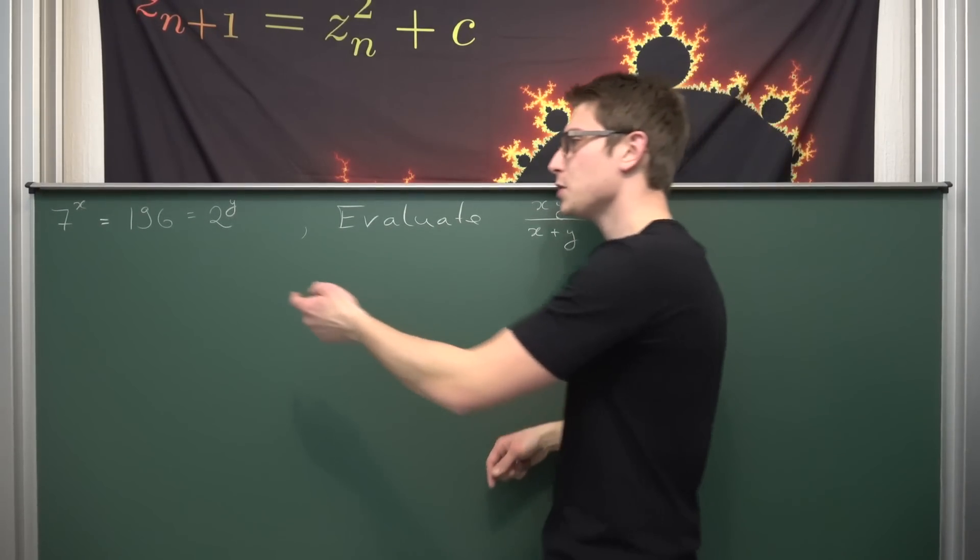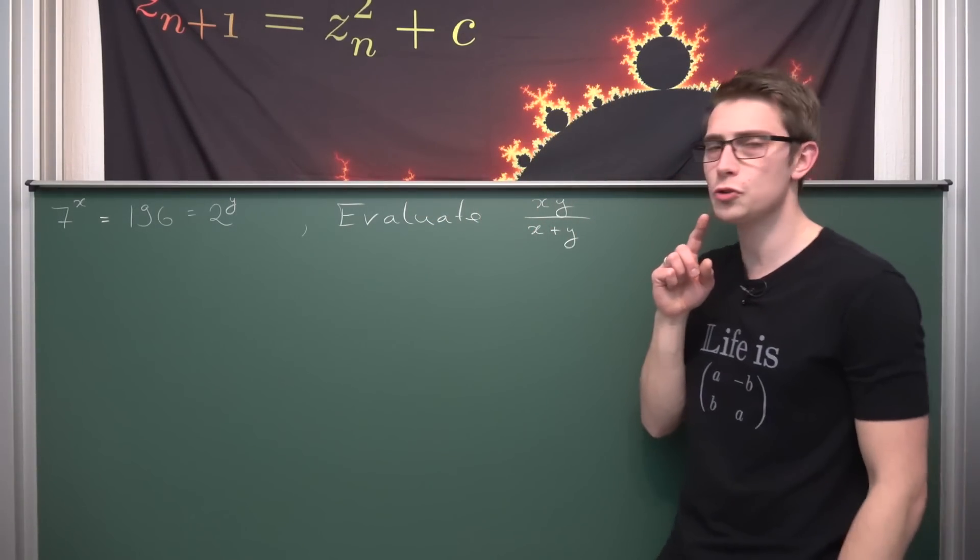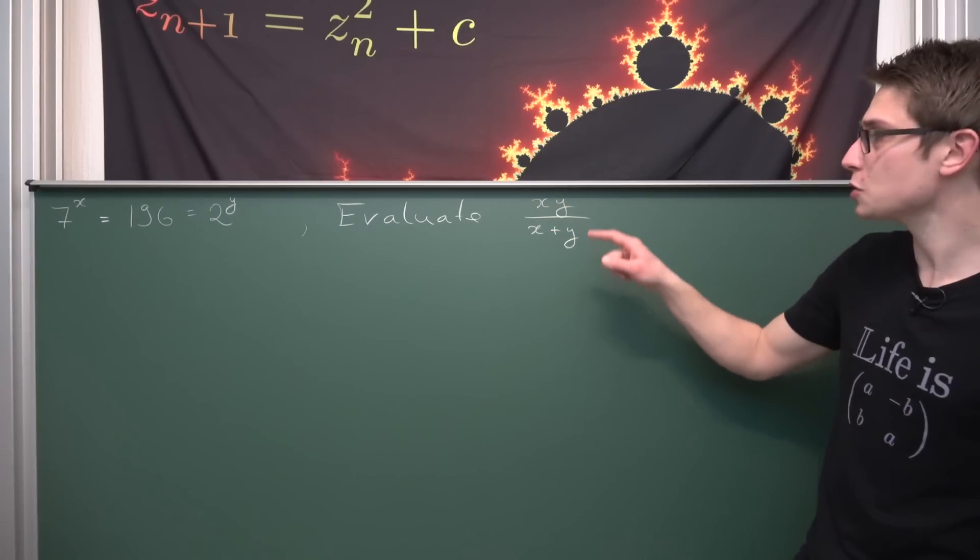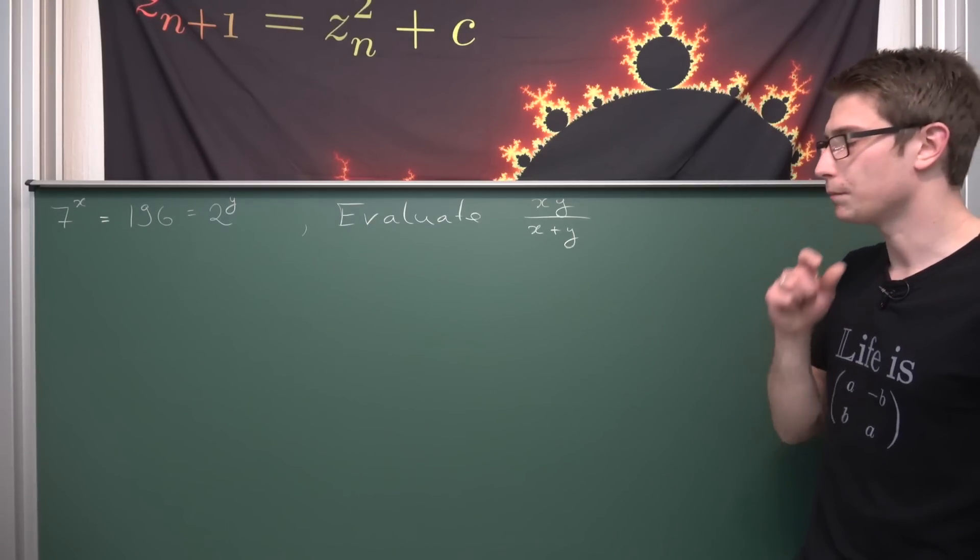Namely, what we have given is that 7 to the x power is equal to 196 and this is equal to 2 to the y power. And what we have to evaluate is the quotient of the product of x and y and x plus y, the sum.